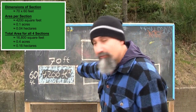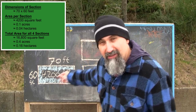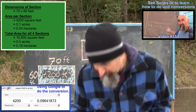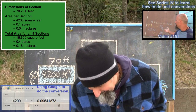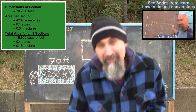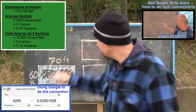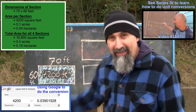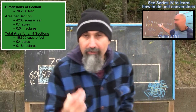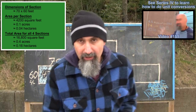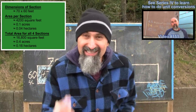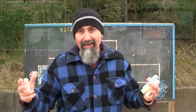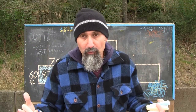4,200 square feet comes out to about 0.1 acres, or 0.04 hectares. They have four of these sections, so basically they're working with 0.4 acres or 0.16 hectares total — that's how much farmland they have to work with.